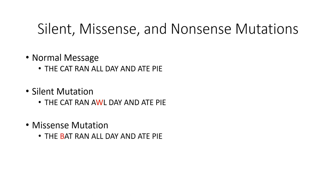In missense mutations, a functional protein is still created, but the mutation alters the structural conformation and function of the protein to some degree. This could be a base pair substitution for an amino acid that alters a local region of protein folding, or a base pair insertion or deletion towards the end of the reading frame that alters the C-terminus to some extent. In the example given, the sentence still makes sense, but a base pair substitution has an impact on the overall meaning of the message.